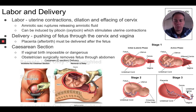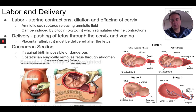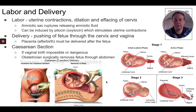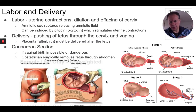Sometimes there are complications with a vaginal birth — the fetus may be under distress and need to be delivered more quickly — and that's when a doctor might perform a c-section, or cesarean section. A cesarean section is when a doctor removes the fetus through an incision in the abdomen — through the abdominal wall, through the muscle, through the uterus — rather than a vaginal birth. A cesarean section usually has a longer recovery period for the mother because all that muscle needs to heal after surgery.